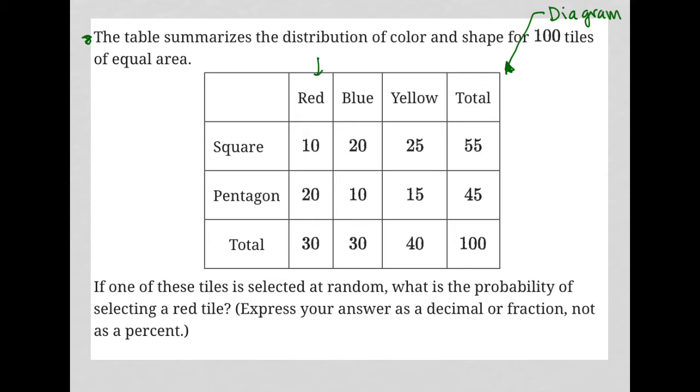We have here our colors: red, blue, and yellow. We have here our shapes: square or pentagon. And of course, we have some total columns, or a total column and a total row.